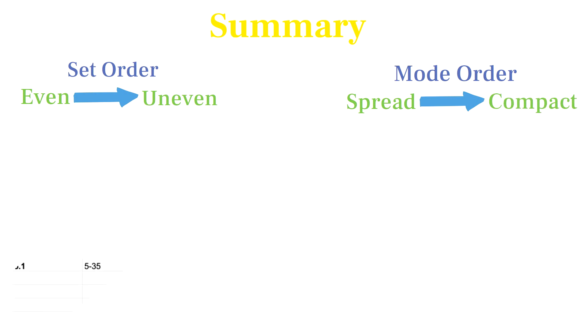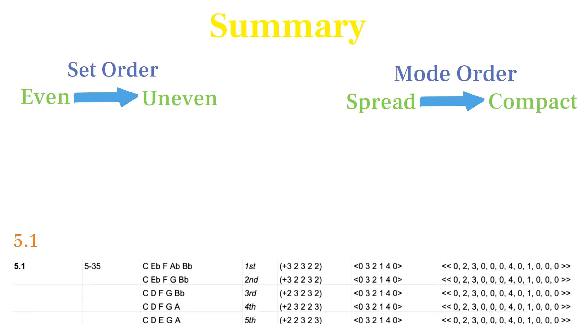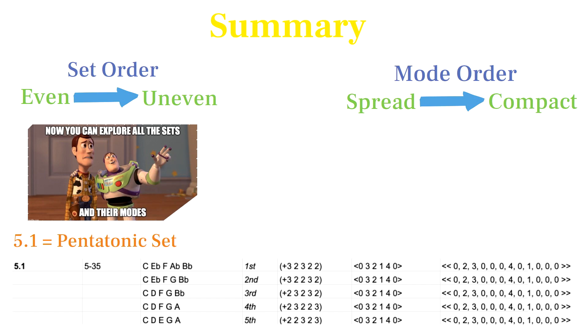In summary, sets that are closest to an equal division of the octave are ranked first in our set chart, and modes of each set are ranked according to compactness with the most spread out modes being ranked first. This allows us to view the world of sets beginning with sets that are most often used in music. I invite you all to explore the world of sets in order of evenness and to explore each set's modes.